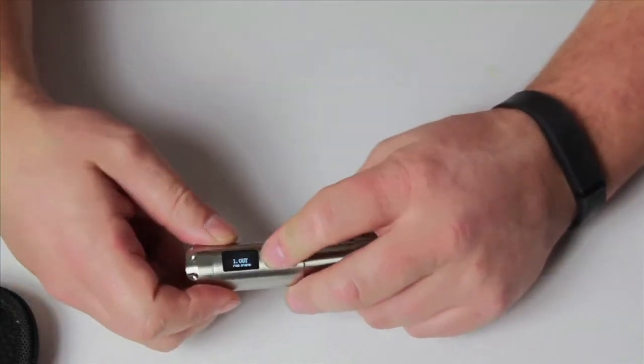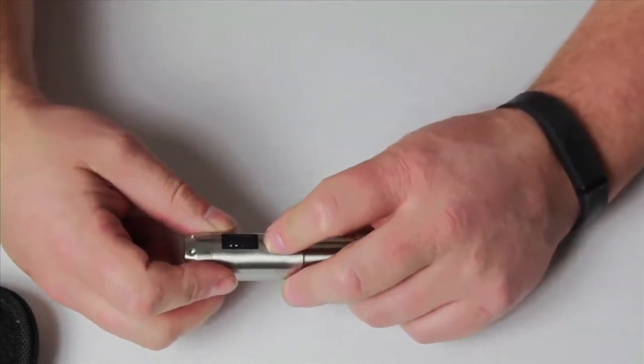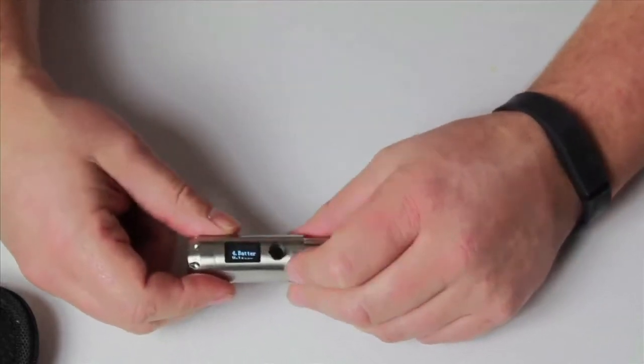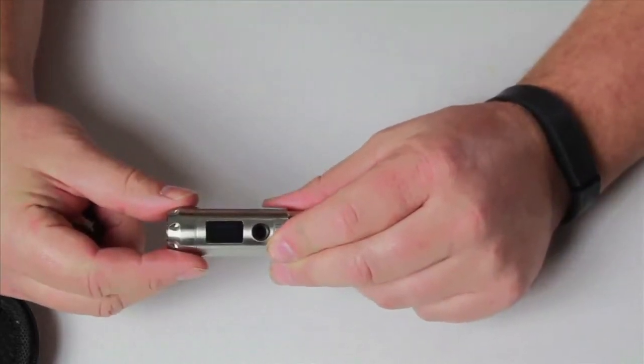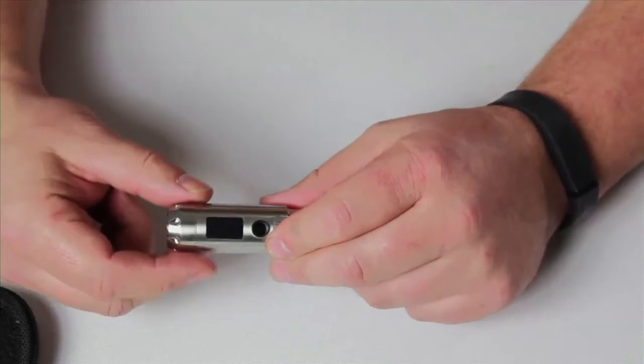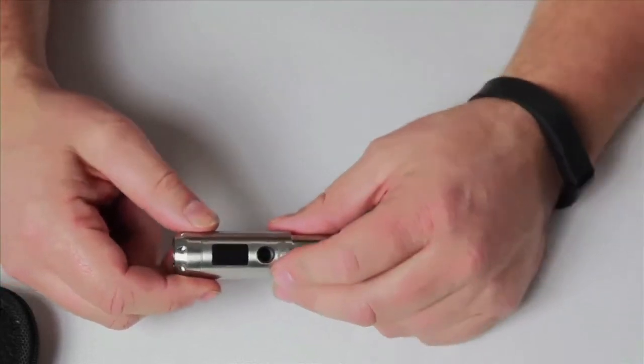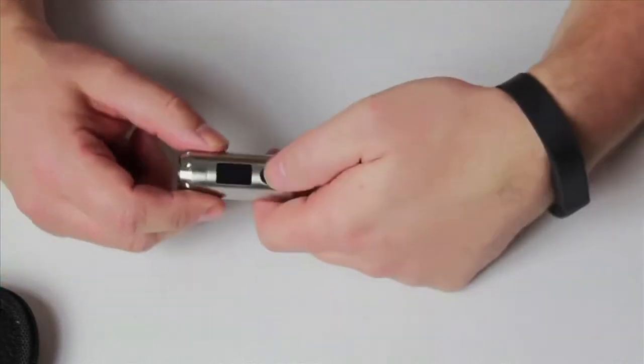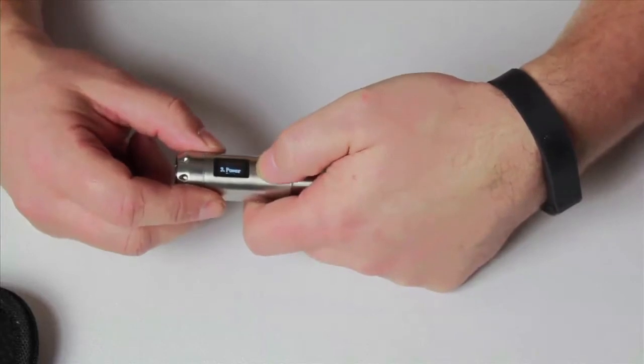The fourth option is battery voltage, which is going to show how much voltage is left on the battery. Standard full charge usually runs about 4.2 volts. When it starts dropping down to the minimum, it's going to be about 3.3.